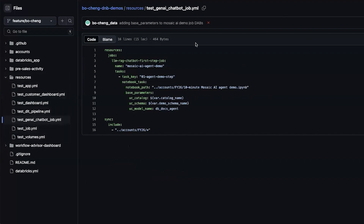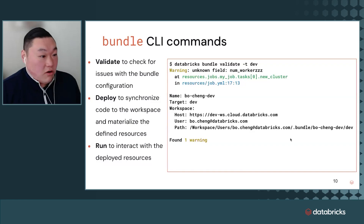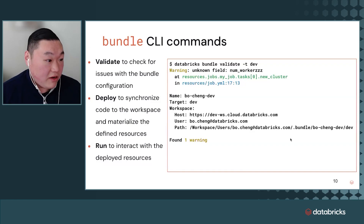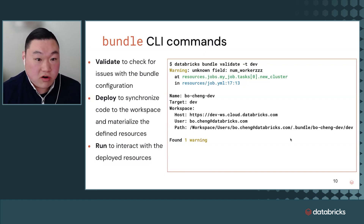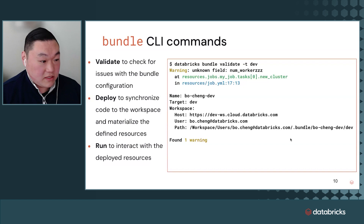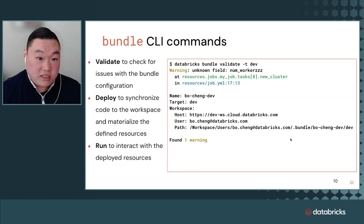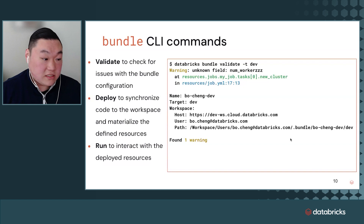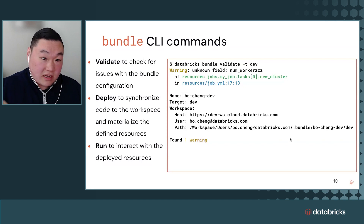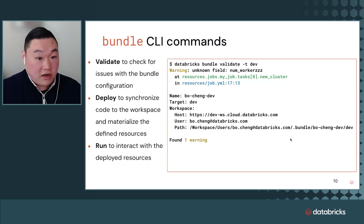Switching back to our CLI commands — here are the bundle CLI commands. We can validate or check for issues with the bundle configuration, very akin to a Terraform plan. We want to make sure our configuration can run before we deploy and run. Next is deployment — we synchronize the code to the workspace and materialize the defined resources. This is where the Terraform TF state really comes into play: we see what resources have drifted, how to adapt for them, and then apply our resources. Next, we can run or interact with the deployed resources — for example, we deploy the job first and that artifact gets created within the workspace, then we click run to enable another job run.